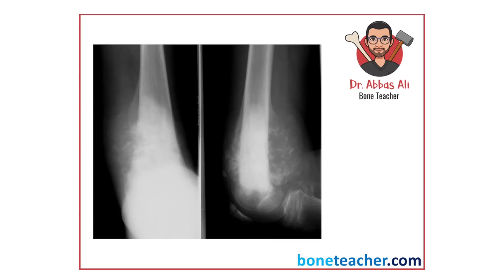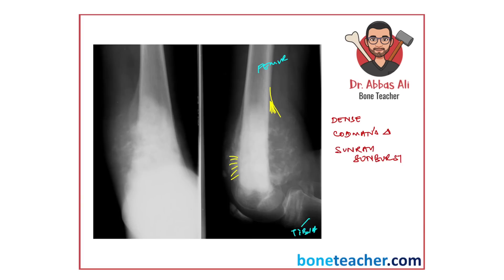Now let's look at this lateral image. This is the femur and tibia, and there is a radio-dense lesion — it appears more white compared to normal bone. What you notice here is the classical Codman's triangle, and this is your sunray or sunburst appearance. So you have a radio-dense lesion with Codman's triangle and classical sunray/sunburst appearance. The lesion is metaphysial — epiphysis, metaphysis, diaphysis are identified.